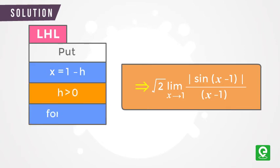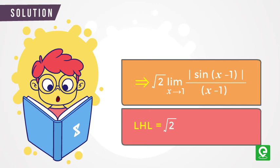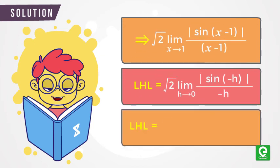So for x approaching 1, we get √2 limit h approaching 0: |sin(-h)| / (-h), which is equal to √2 limit h approaching 0: sin(h) / (-h), which is equal to -√2.